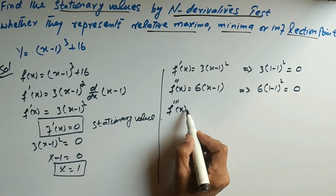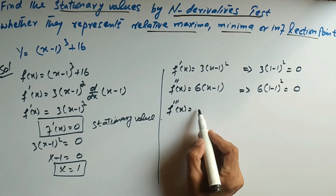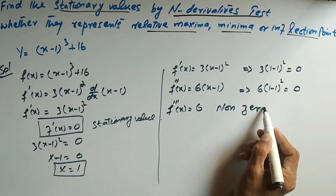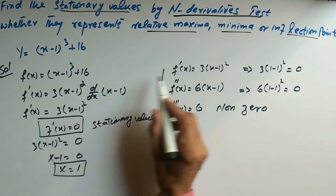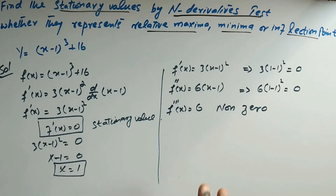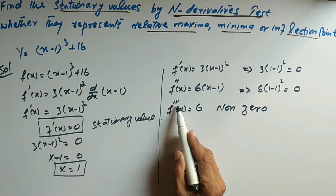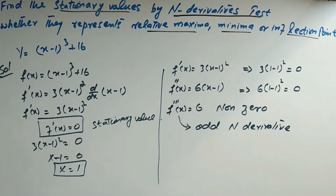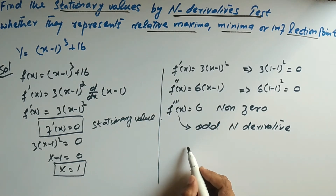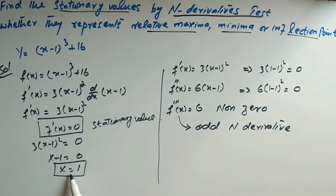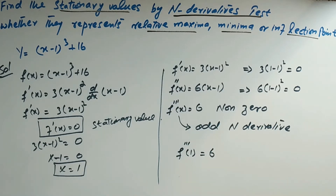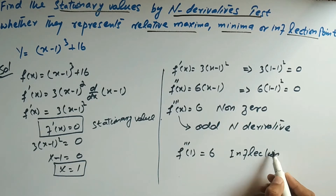Now we take the third derivative. The third derivative is 6, which is non-zero. Since the nth derivative that is non-zero is the third derivative, and 3 is odd, this is an odd nth derivative. When we put x = 1, f'''(1) = 6. Because n is odd and the derivative is non-zero, this is an inflection point.